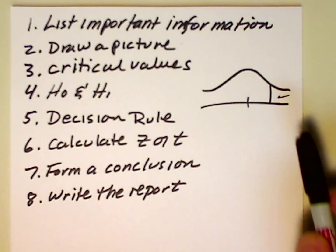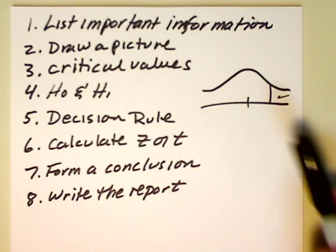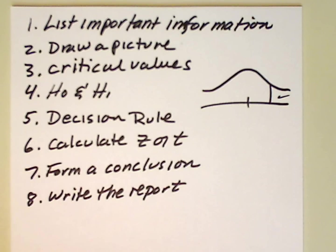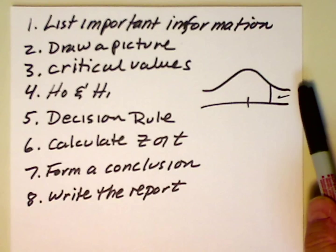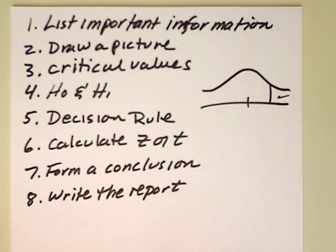In step three, we determine the critical value — that's the cutoff point here for Z. Then in step four, we need to calculate the null and alternate hypotheses, H sub 0 and H sub 1. We need to create a decision rule, which tells us to reject the null under certain conditions or do not reject the null. The sixth step is to calculate Z or T, the test statistic that tells us where the observation lies — is it to the right of this critical value or to the left of this critical value?